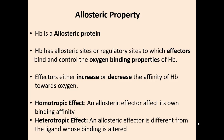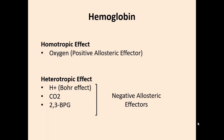Heterotropic effect: an allosteric effector is different from the ligand whose binding is altered. For example, 2,3-bisphosphoglycerate, when it binds to regulatory sites other than the active sites, decreases the affinity of hemoglobin towards oxygen. The allosteric effectors of hemoglobin include: oxygen, which has a homotropic and positive allosteric effect, increasing affinity; and proton ions, carbon dioxide, and 2,3-bisphosphoglycerate, which are negative allosteric effectors, decreasing affinity.